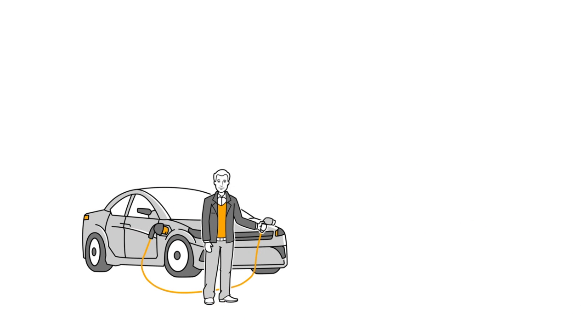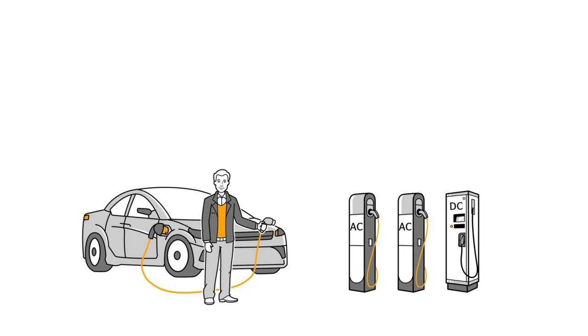To recharge through a cable, David can stop at three different types of charging stations: single phase AC stations, three phase AC stations, and DC fast charging stations. What's the difference?